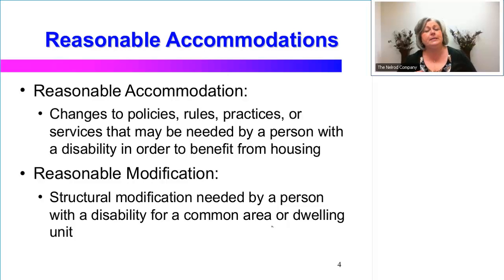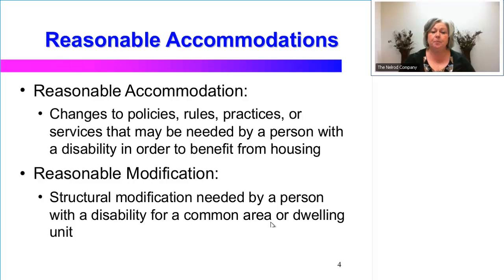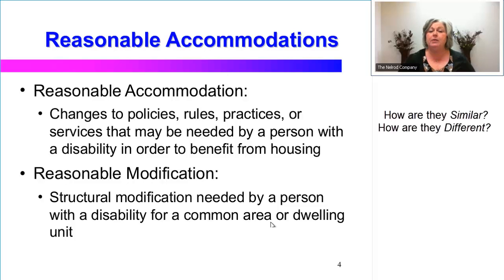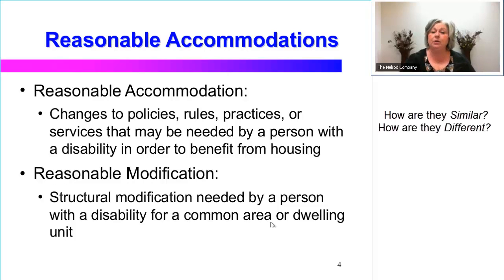So what's the difference between a reasonable accommodation and a reasonable modification? A reasonable accommodation is a change to your policies, procedures, rules, practices, or services that are needed by a person with a disability in order to fully enjoy the housing provided. Reasonable modification involves a structural change needed by a person with a disability. This could be for a common area, such as your community room, your office, even a playground or sidewalk or curb, or it could be for the dwelling unit itself.